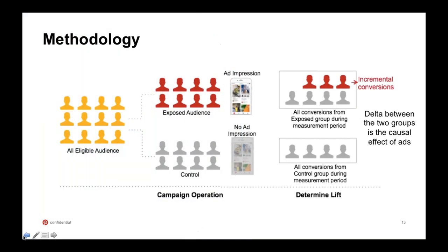For OCL methodology, the entire eligible audience is divided into an exposed and control audience. The exposed audience sees the ad; the control does not. The two audiences are then compared and incremental conversions are identified — the delta between the two groups represents the causal effect of the ads on conversions. To utilize an OCL study, the Pinterest tag must be implemented on partner pages, campaigns must run for a minimum of four weeks with a two-week dark period, and there is a spend requirement. Contact your Pinterest rep for details.